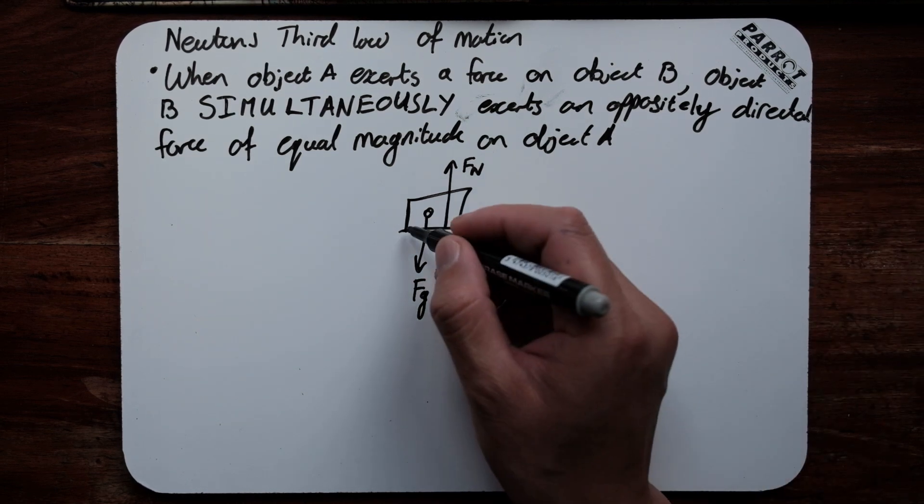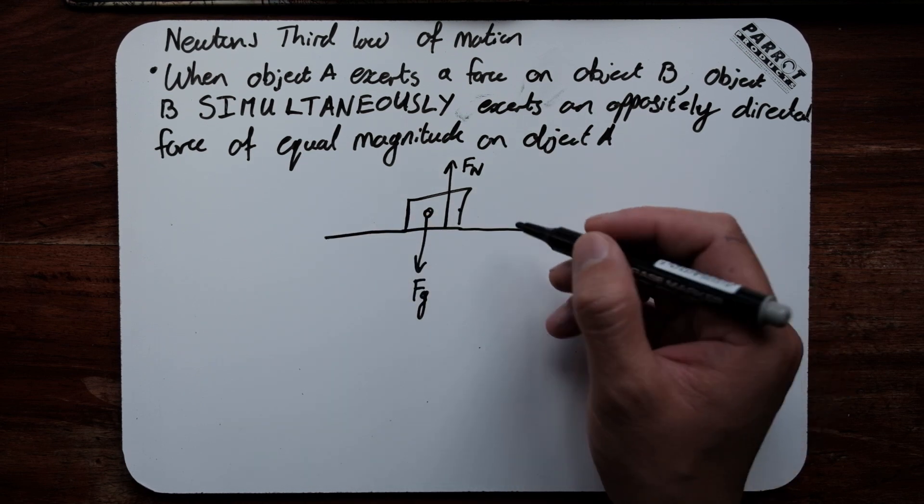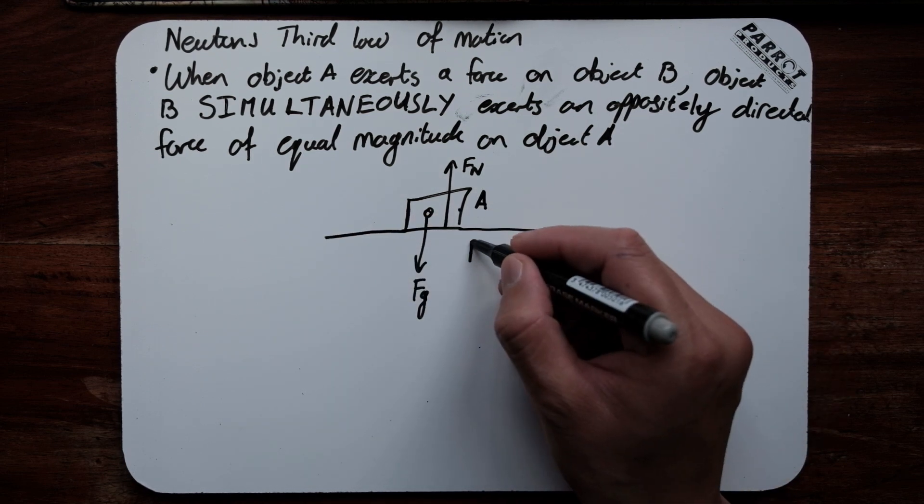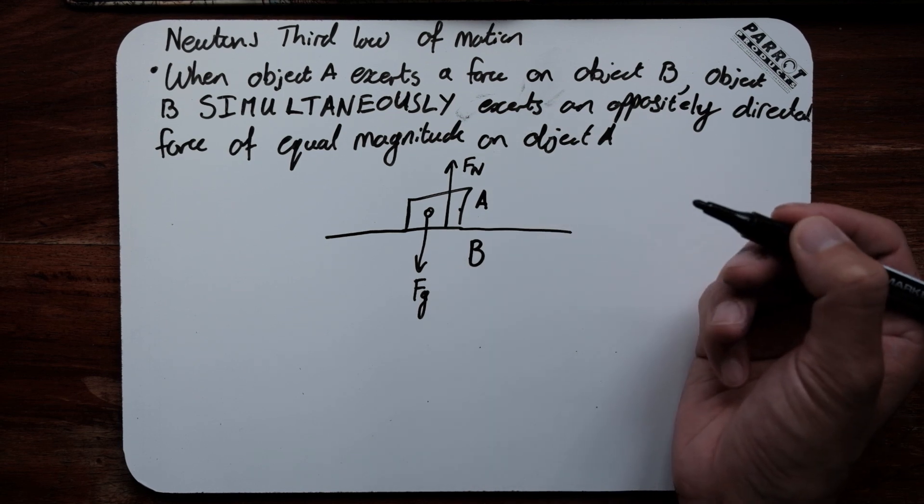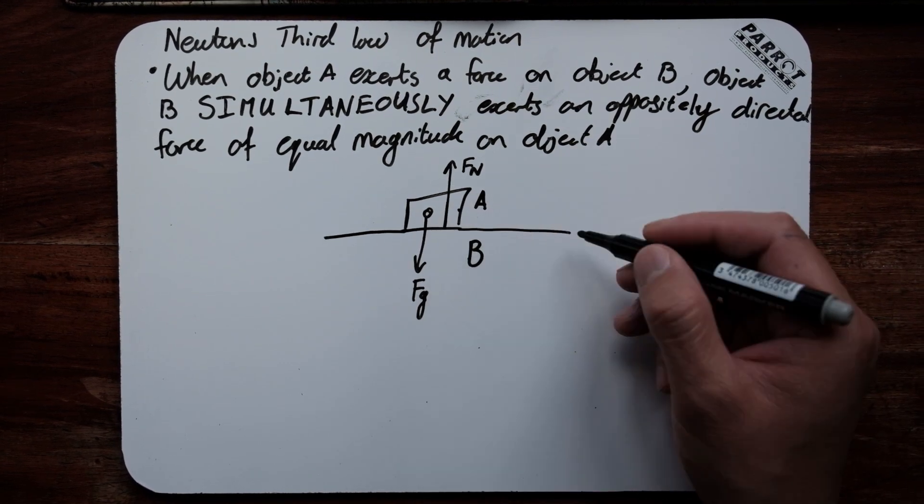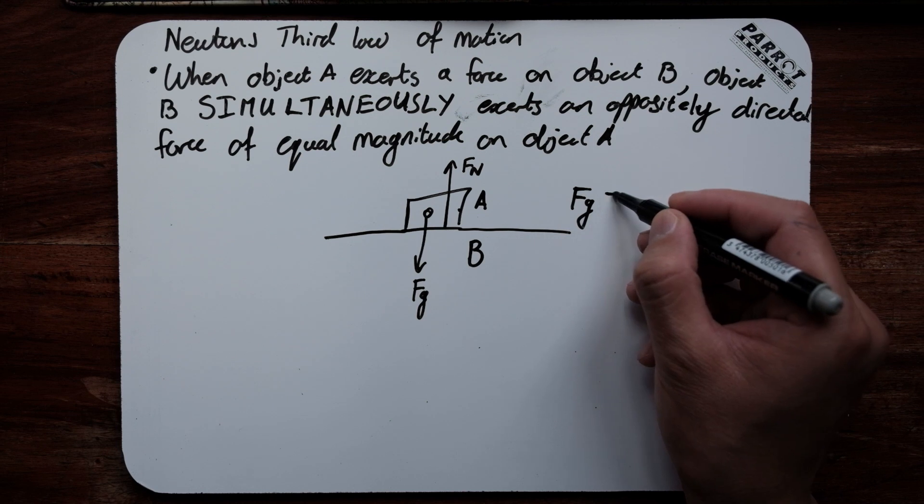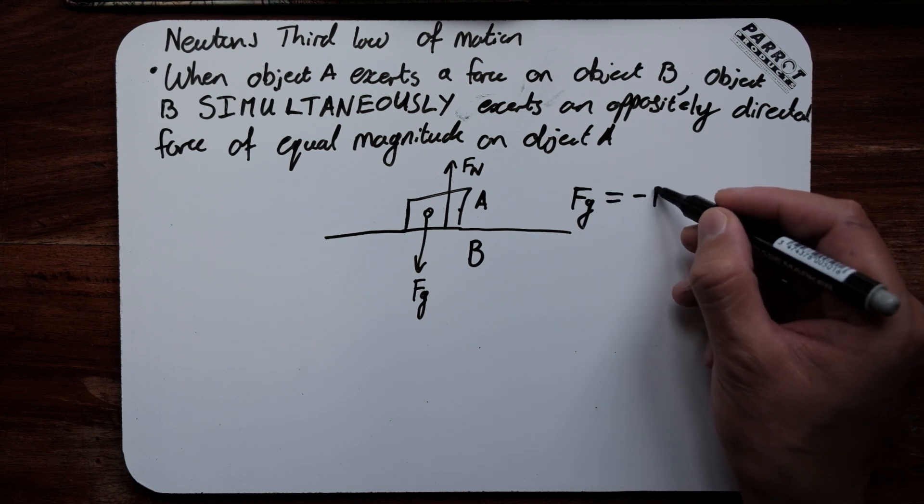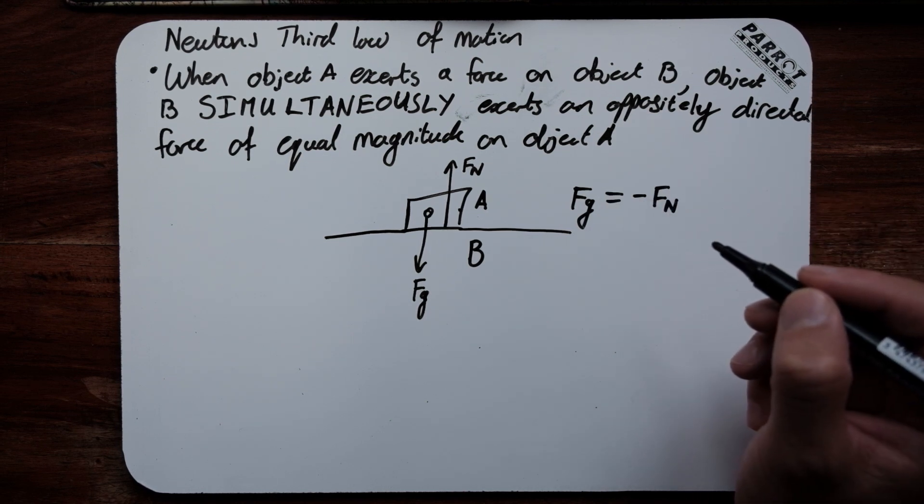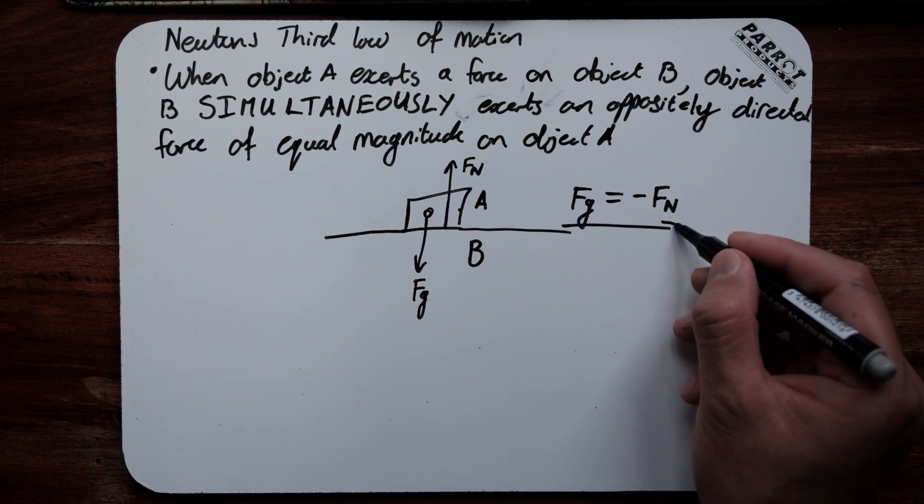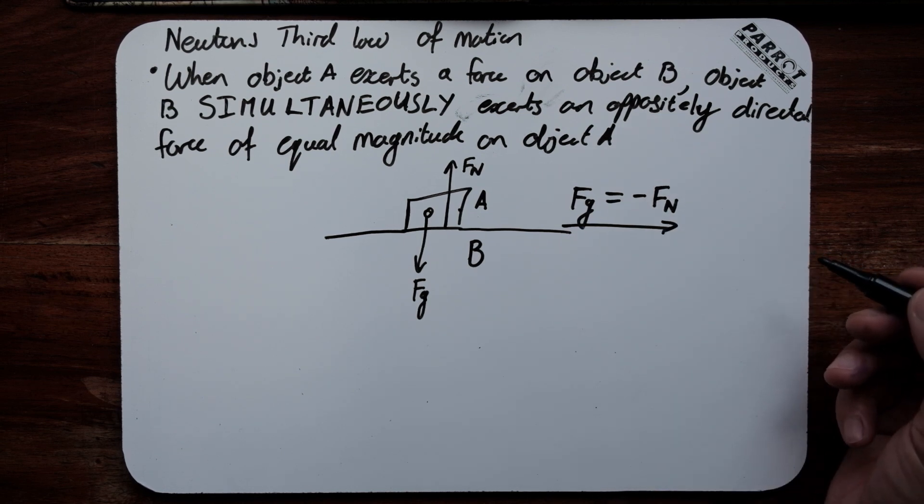If our object is on a surface, we could say that our object is object A, our surface is object B, and therefore the force of gravity is equal in magnitude but opposite in direction to our normal force. And that is essentially Newton's third law.